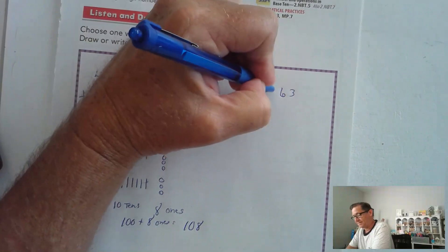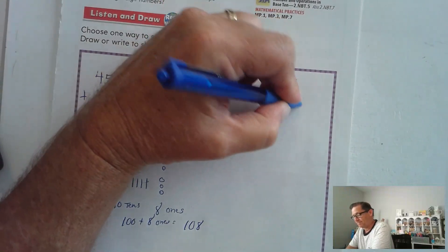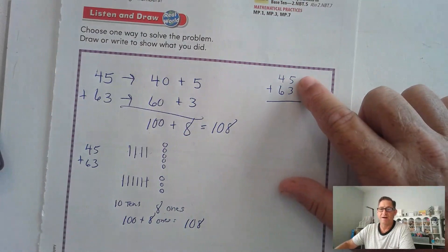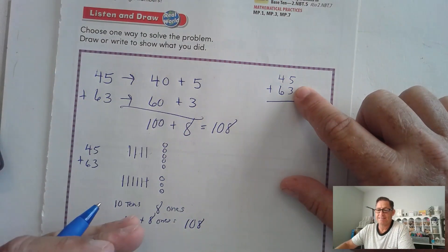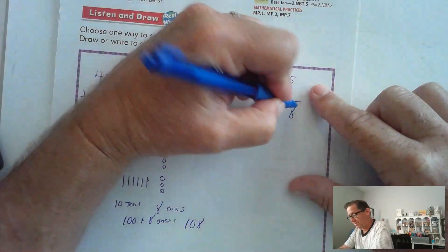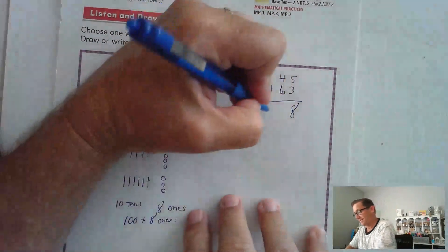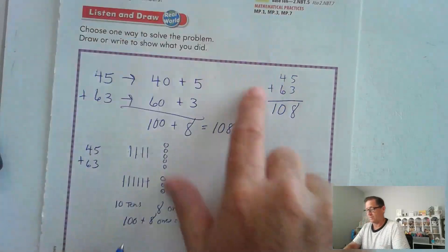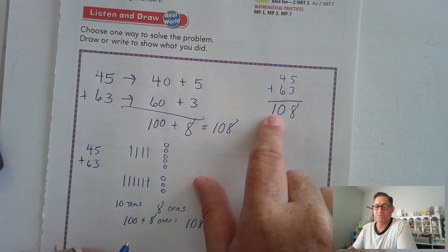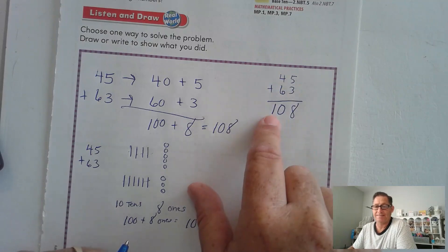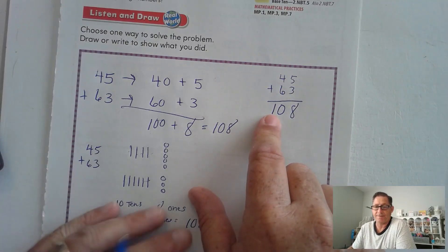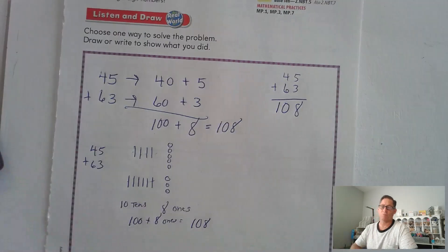We could have done the standard algorithm. Start by adding the ones: 5 plus 3 is 8. There aren't any ones to regroup, so we write 8. Add the tens: 6 and 4 make 10 tens. There aren't any hundreds, so we don't need to regroup those 10 tens. We write 10, meaning 100. So it's 108.